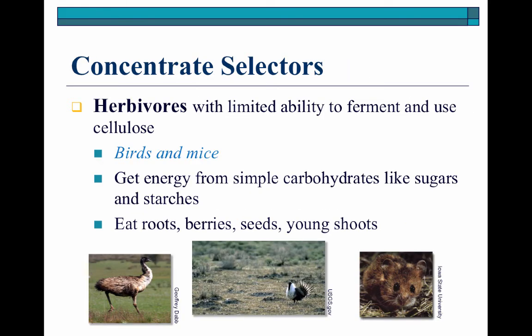Our concentrate selectors tend to be herbivores that have a limited ability to go through the fermentation process and use cellulose. These are going to be birds and mice, and they're going to get a lot of their energy from simple carbs — like sugar and starches. So you're going to see them eating lots of roots, berries, seeds, and young shoots.